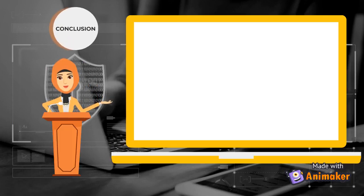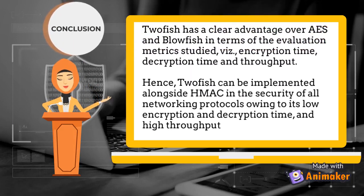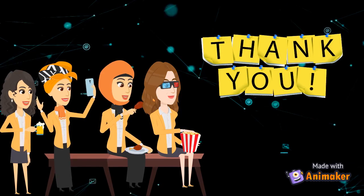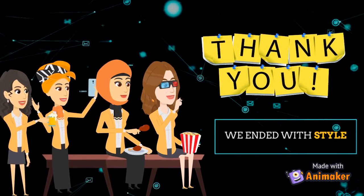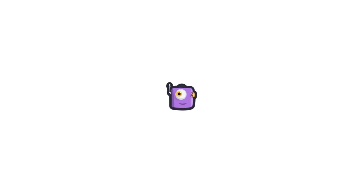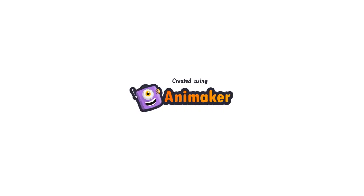In conclusion, Twofish has a clear advantage over DES and Blowfish in terms of the evaluation metrics studied — namely encryption time, decryption time, and throughput. Hence, Twofish can be implemented alongside HMAC in the security of networking protocols owing to its low encryption and decryption time and high throughput. That's all from us. Thank you for watching and see you!